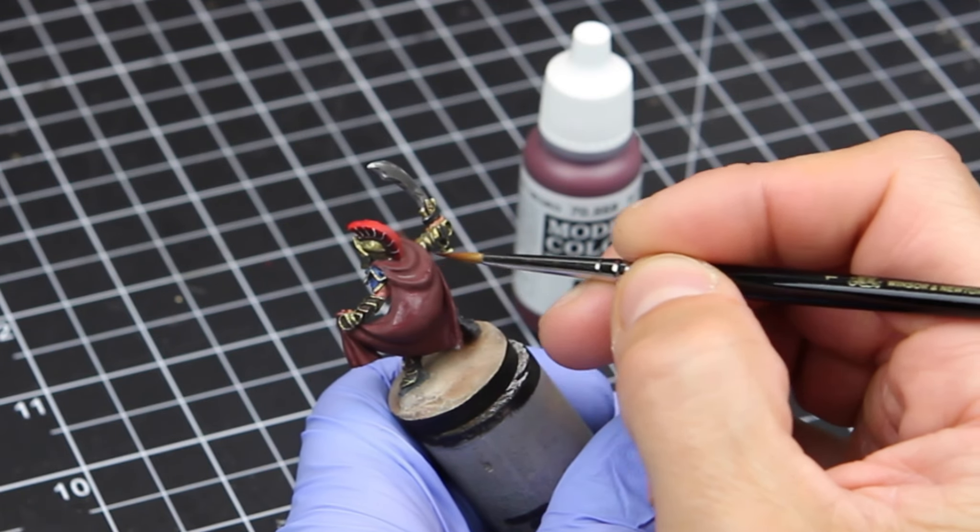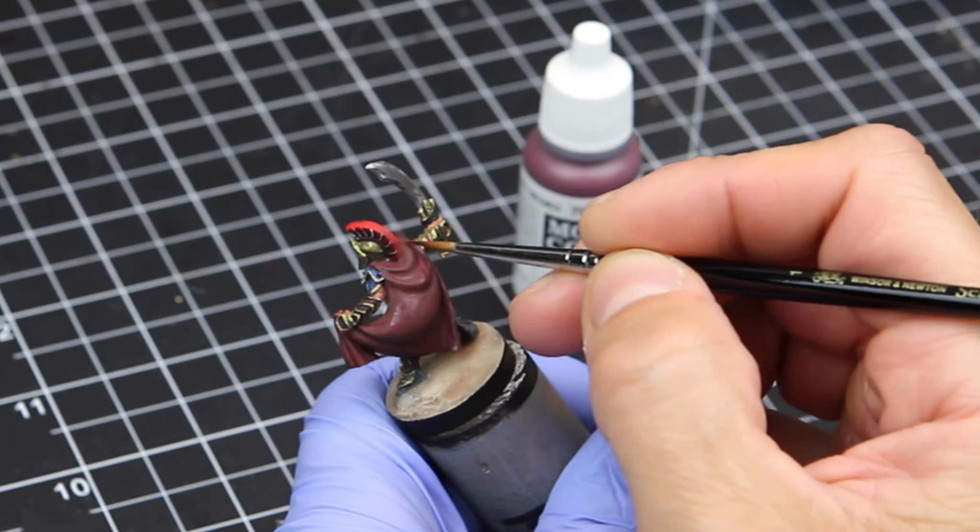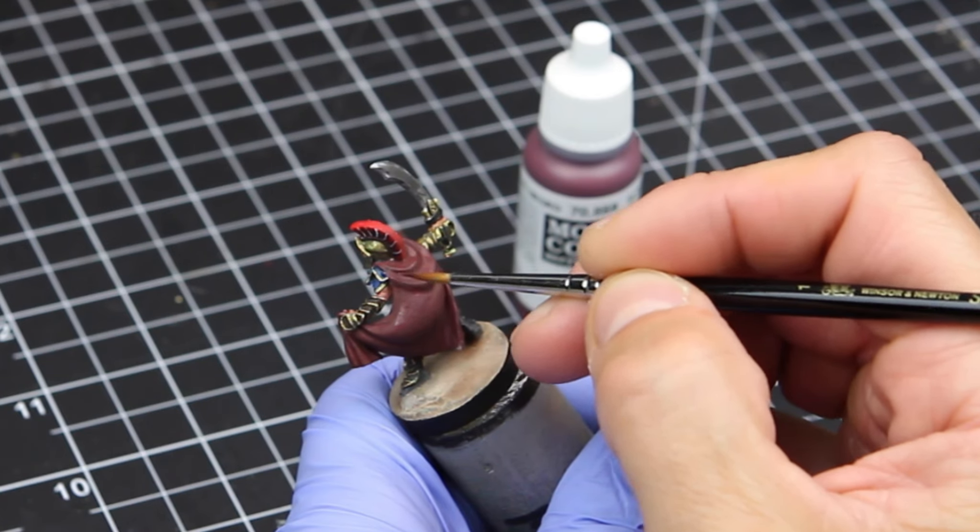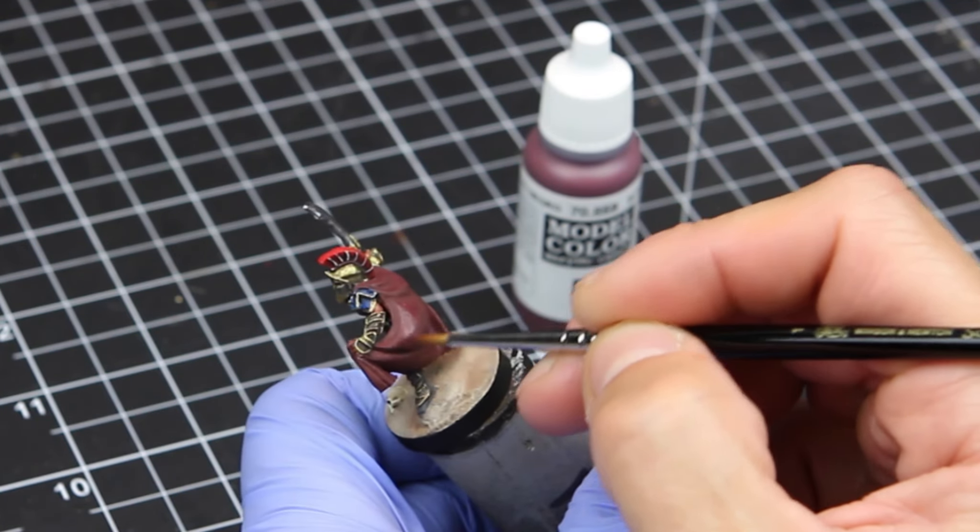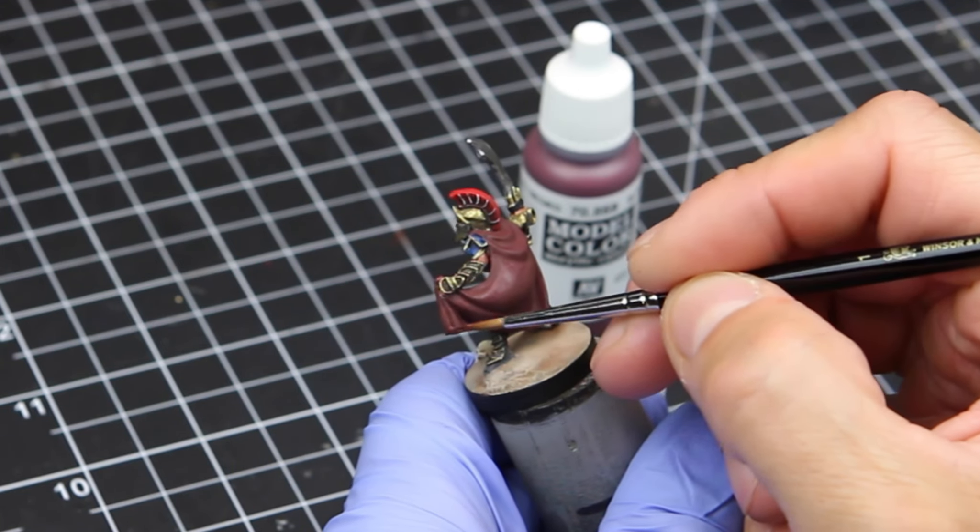But one of the nice things about that is if I screw up a brush stroke, you're really not going to notice it. So it's a very forgiving method as long as you have the paint thinned down properly.